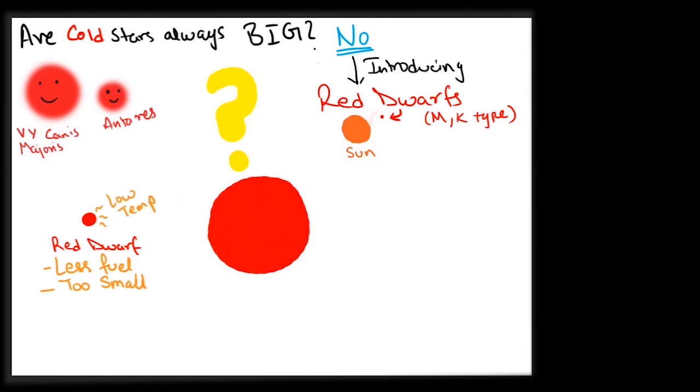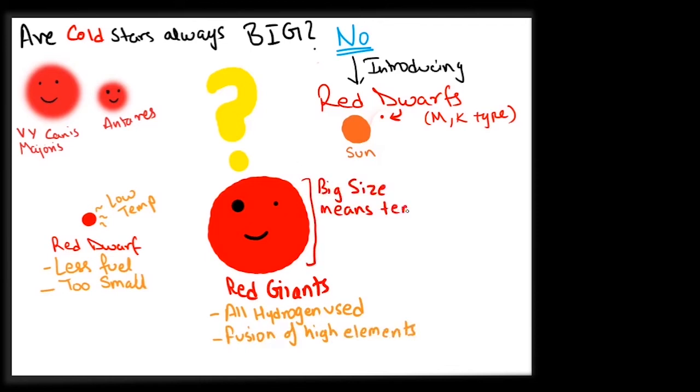Also, stars, after they cross the main sequence stage of their lives, where their cores have used up all the hydrogen, moved on to fusing helium. And in doing so, they enter the red giant or the red supergiant stages. The size of stars increased remarkably in this stage, and now the energy has to spread in a bigger volume, and hence the average temperature falls down.